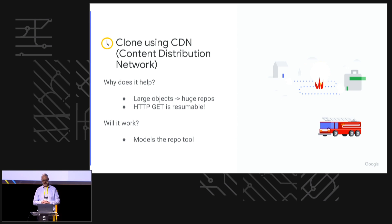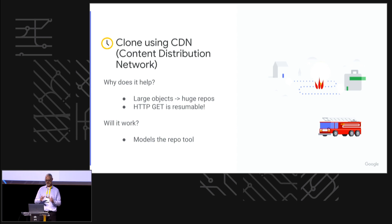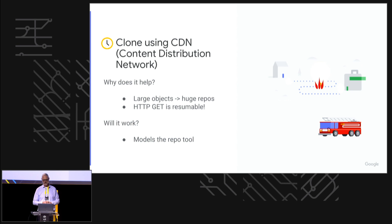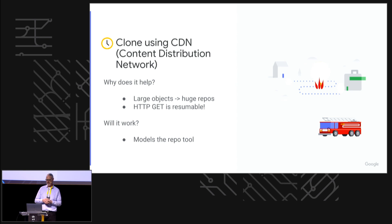Do we think this will work? Android's release model involves lots of development of new APIs, with an internal copy of the codebase that gets merged with the external copy once a year, and the whole world comes to download it. Our servers right now would not be able to handle that load without using this kind of strategy. There's a tool in the Android environment called the repo tool that does exactly this — it fetches a static copy from a few days ago of the repository, puts that in the .git directory, and then does an incremental fetch on top of that.